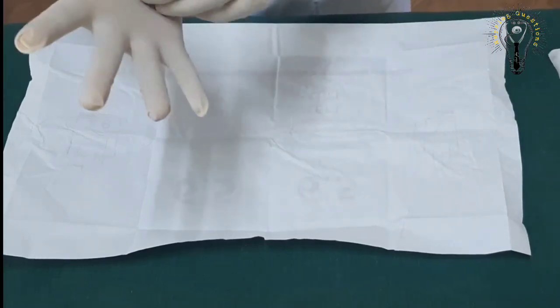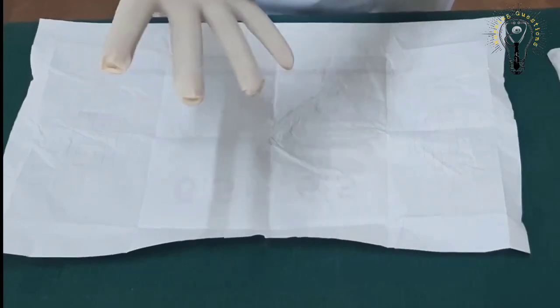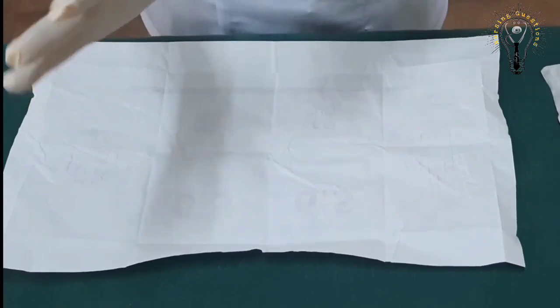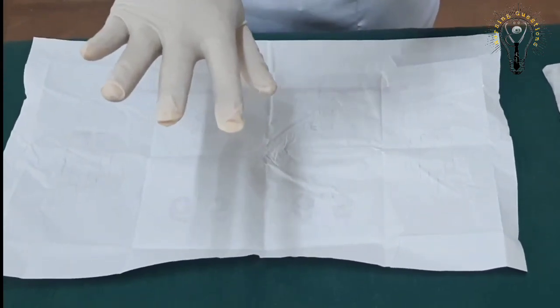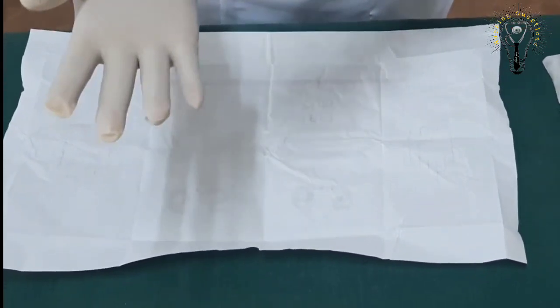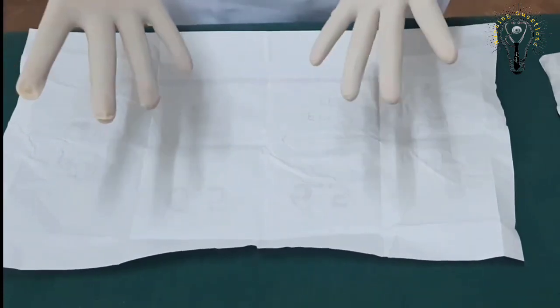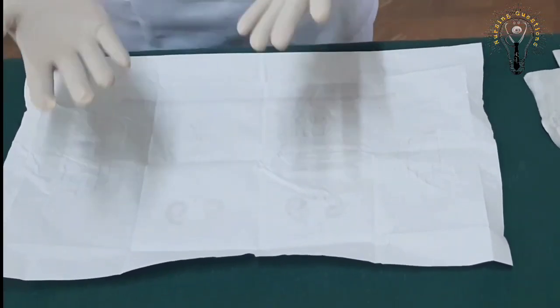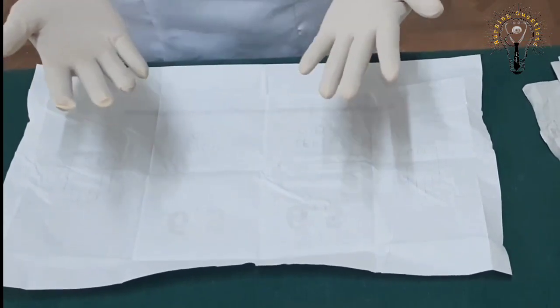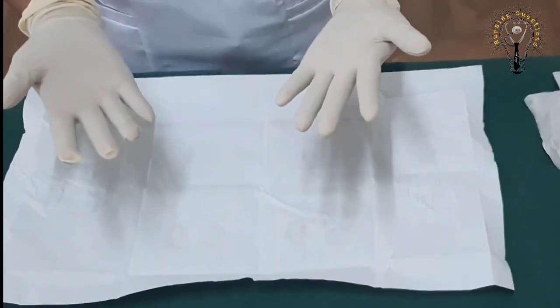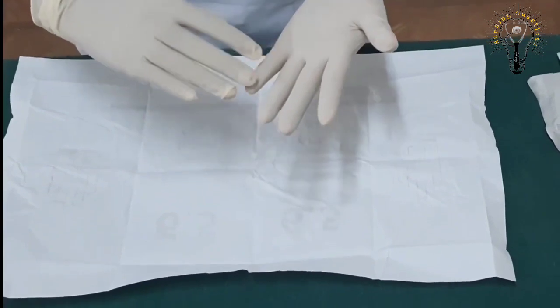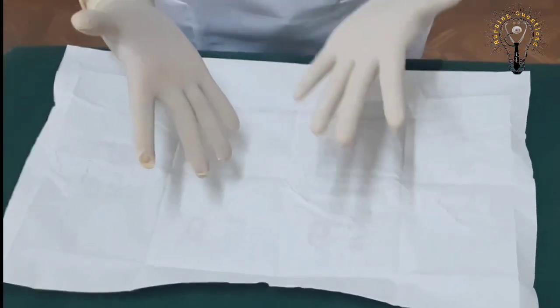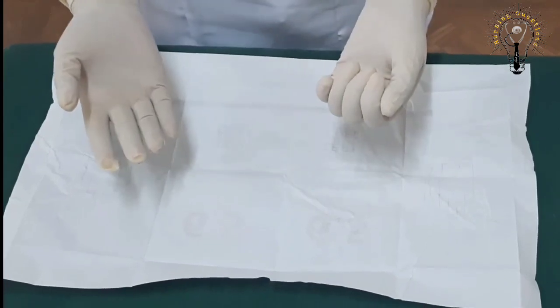Now you can arrange your sterile gloves. Again, avoid touching the non-sterile part. Now we are done with the donning of your sterile gloves. Next, how are we going to remove your sterile gloves, considering that you have already used up your sterile gloves or they are already soiled?